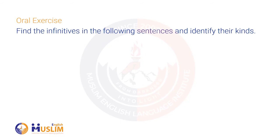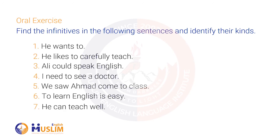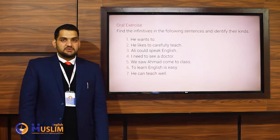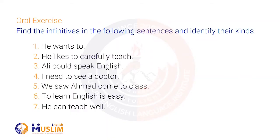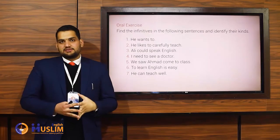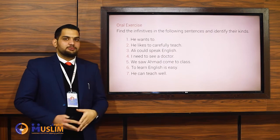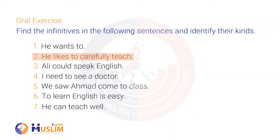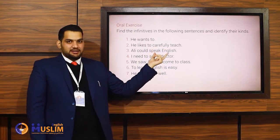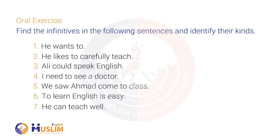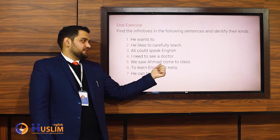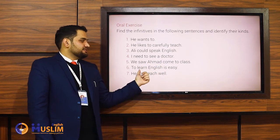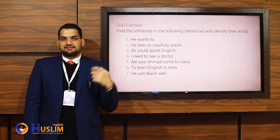Now let's do an oral exercise: find the infinitives in the following sentences and identify their kinds. Number one: 'He wants to' — we just have 'to,' it is shortened, so that's an abridged infinitive. Number two: 'He likes to carefully teach' — 'to carefully teach' is a split infinitive. 'Ali could speak English' — bare infinitive. 'I need to see a doctor' — full infinitive. 'We saw Ahmad come to class' — used after a sense verb, so it is bare infinitive. 'To learn English is easy' — full infinitive, used as the subject of a sentence.